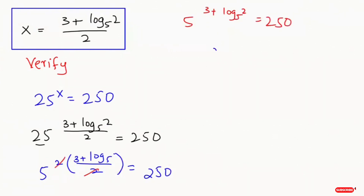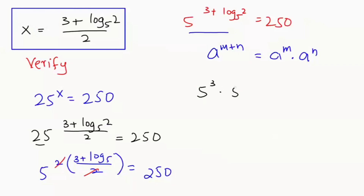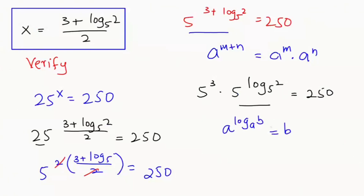Now I'm going to apply the exponential rule that a to the power of m plus n can be written as a to the power of m times a to the power of n. Applying this rule: 5 to the power of 3 times 5 to the power of log base 5 of 2 equals 250. Applying the logarithm rule that a to the power of log base a of b equals b, this gives 5 cubed times 2, which is 125 times 2, equals 250. And 250 equals 250.